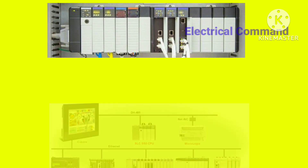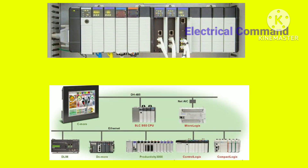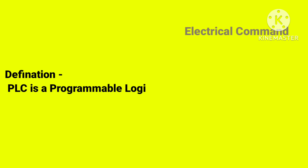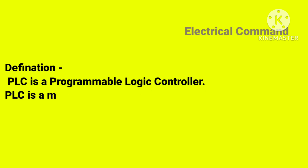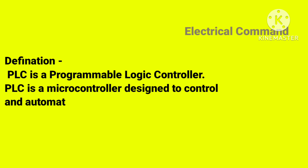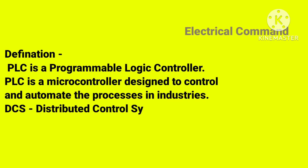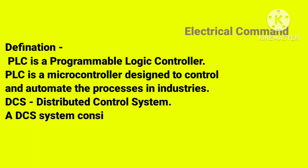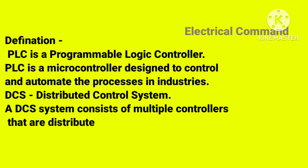Welcome to Electrical Command. In this video we will see the basic differences between PLC and DCS systems. PLC stands for Programmable Logic Controller — a microcontroller designed to control and automate processes in industry. DCS stands for Distributed Control System, consisting of multiple controllers distributed throughout the area of a plant.